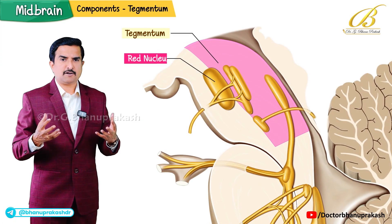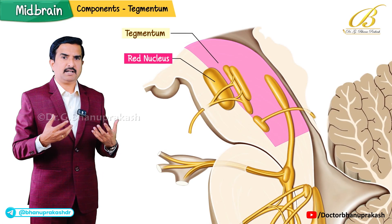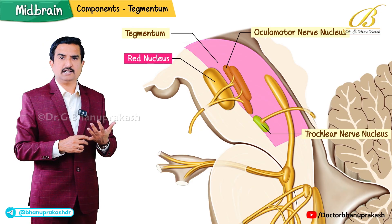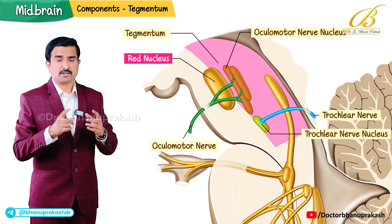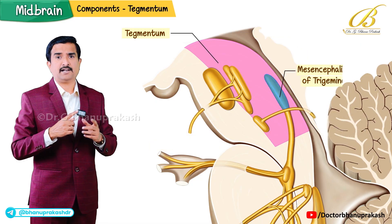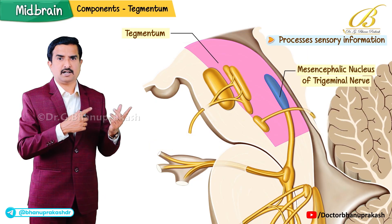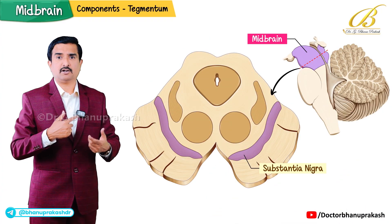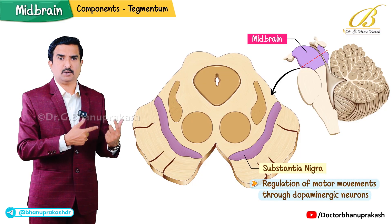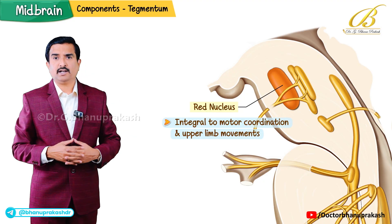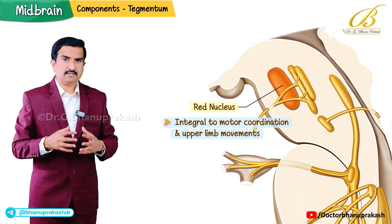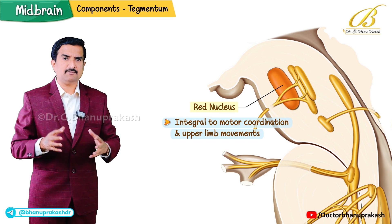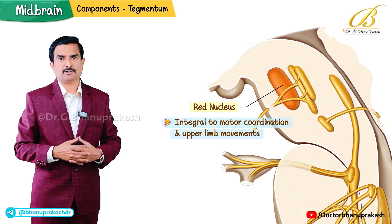The tegmentum plays an important role in multiple systems. It contains nuclei of cranial nerves such as the oculomotor and trochlear nerves which control eye movements, the mesencephalic nucleus of the trigeminal nerve which processes sensory information related to jaw and chewing muscles, the substantia nigra involved in regulation of motor movements through its dopaminergic neurons, and the red nucleus which is integral to motor coordination and upper limb movements. By this, we have completed our detailed study of the midbrain, covering everything related to the tectum and tegmentum.